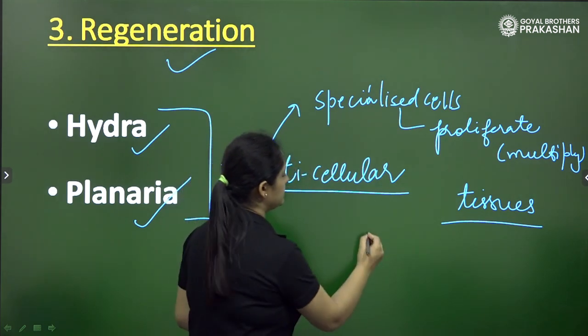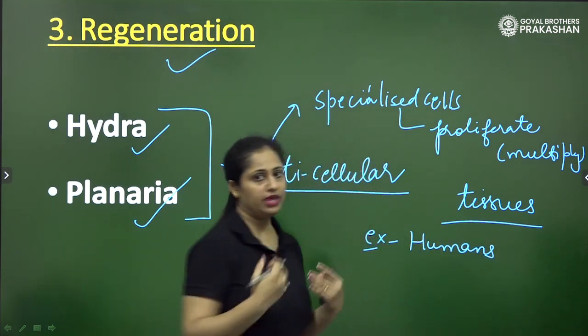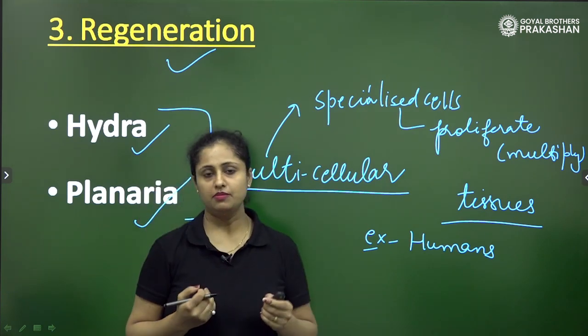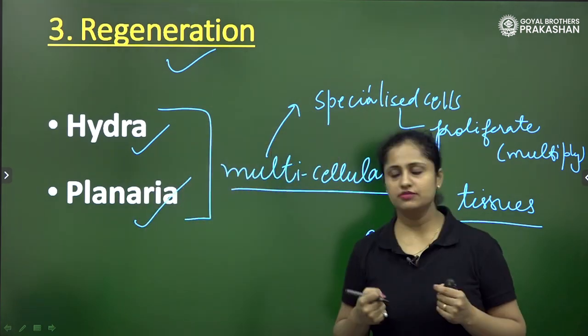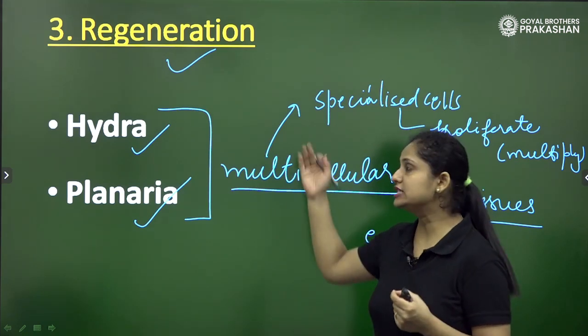For example, in case of humans, we humans are also multicellular but still in our body we can't carry out the process of asexual reproduction that is through regeneration.